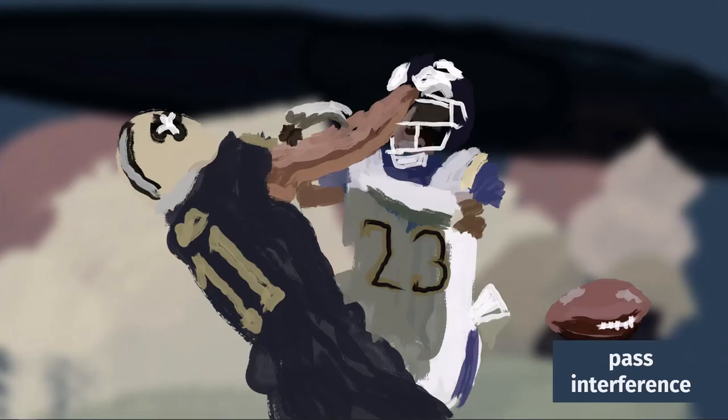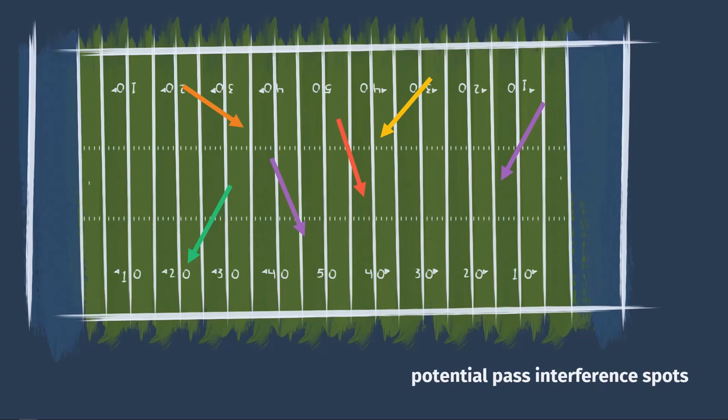Pass interference can be a major penalty and can be called on either team, though it's more commonly committed by the defense. Once the quarterback throws the ball, the defender cannot impede the receiver's path to the ball by grabbing, holding, tripping, tackling, or anything like that. In the NFL, the penalty for defensive pass interference places the ball at the spot of the foul, which could be 70 yards up the field — a massive gain for the offense. In college and high school, the penalty is just 15 yards regardless of where the foul occurred. For offensive pass interference, the penalty is a loss of 10 yards from the previous line of scrimmage.